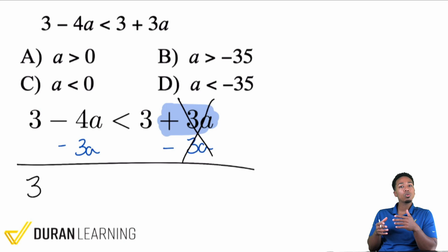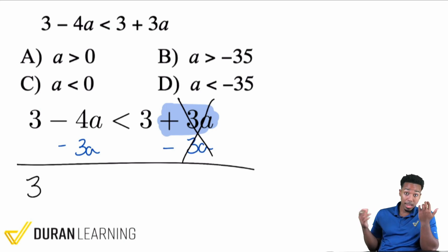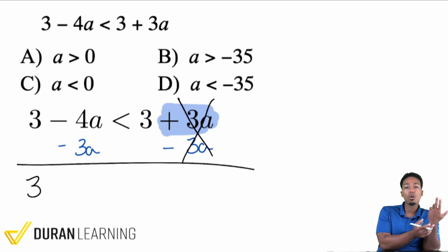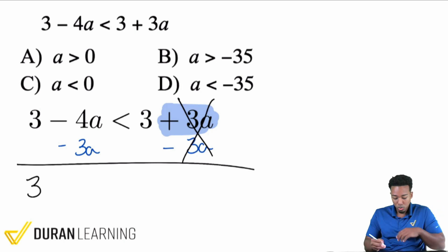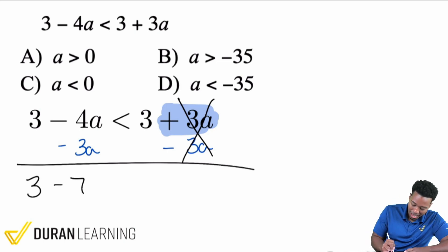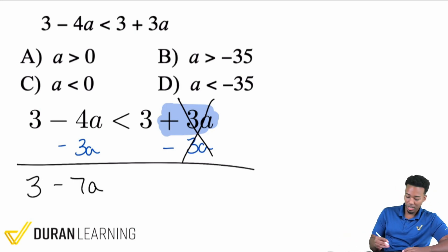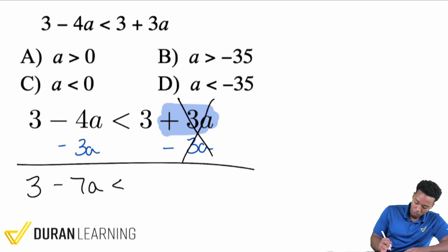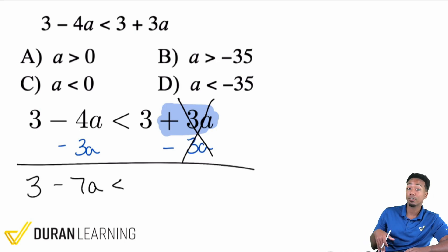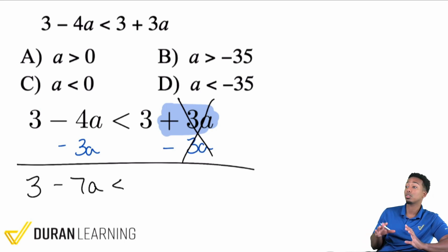So what we're doing here is we're saying, go back 4, then go back 3 more. 4 plus 3 is 7, so it's a total of 7, but negative. We don't flip the symbol because that was not a multiplication or division of a negative — that was just subtracting.